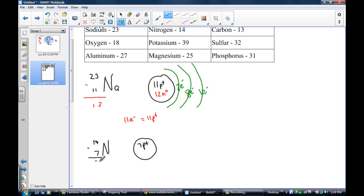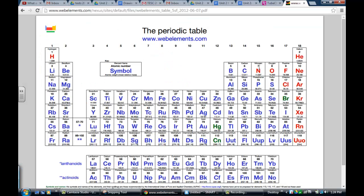14 minus seven gives us seven neutral neutrons. The mass of the nucleus is indeed seven. Notice the arrangement on the periodic table. Nitrogen is in period two, the second row down. It will have two energy levels.